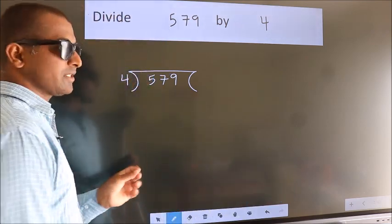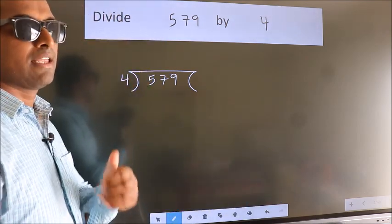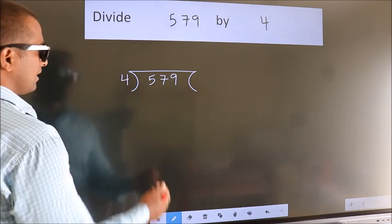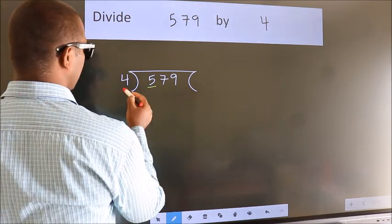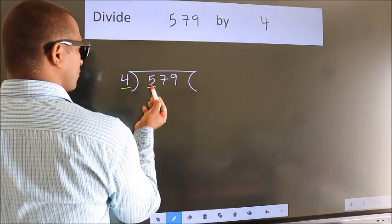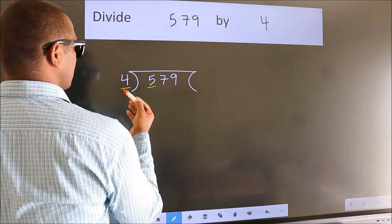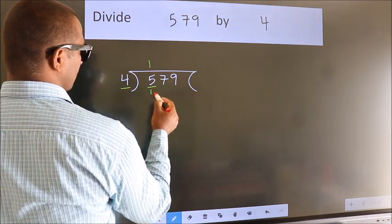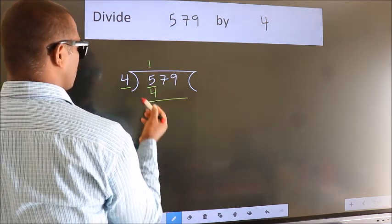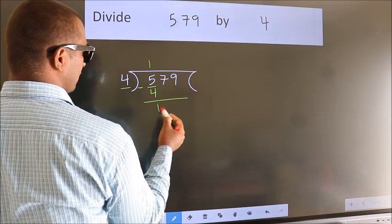This is your step 1. Next, here we have 5, here 4. A number close to 5 in the 4 table is 4 once 4. Now, we should subtract. We get 1.